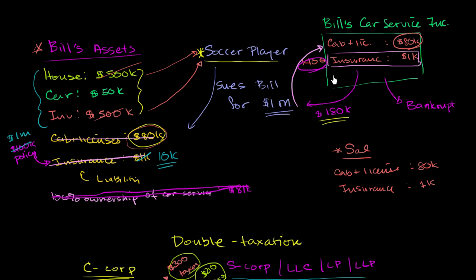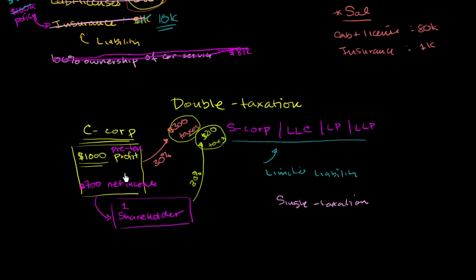And then the other trade-off is this double taxation thing. At least for large corporations, the type that, you know, the General Electrics and the Googles and the Microsofts of the world, they do pay a fee for this limited liability, and that's in terms of this double taxation. Although smaller corporations, right when they're getting started out, or kind of partnerships, they don't have the double taxation, but they do get the limited liability.